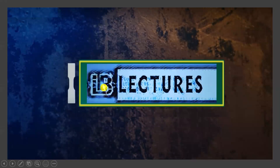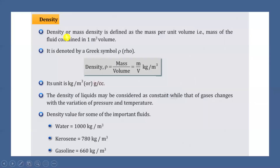Hello everyone, welcome to our channel LB Lectures. In today's class we will see what is density of the fluid. Density is also called mass density and is defined as mass per unit volume. The mass of the fluid contained in one meter cube volume is called density or mass density, and it is denoted by the Greek symbol Rho.